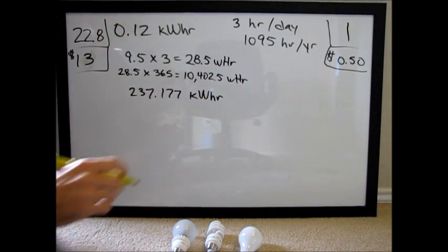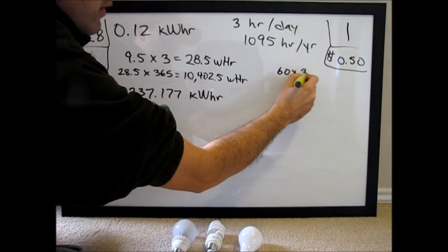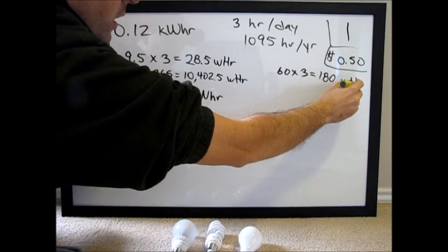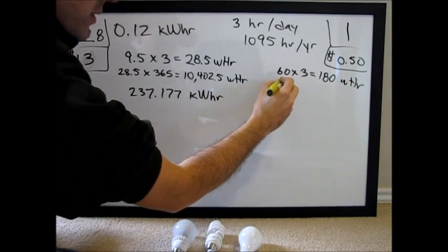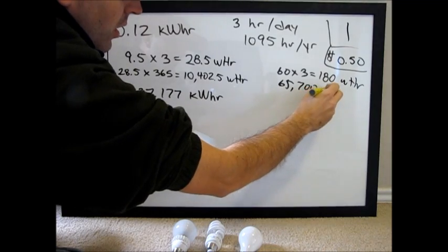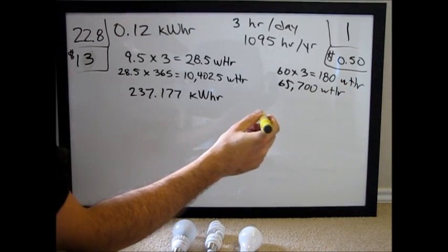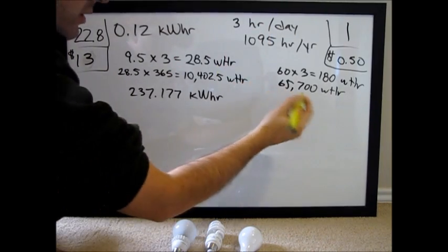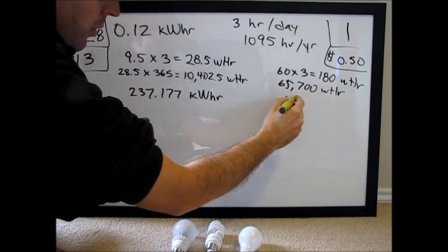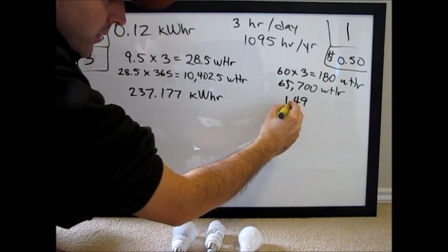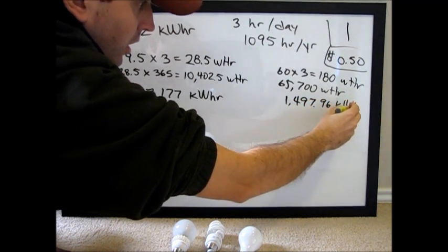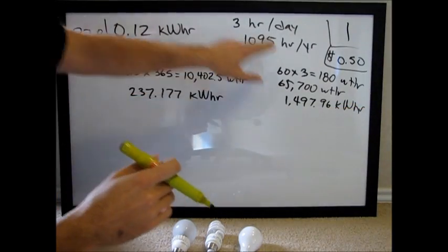Over here, we've got 60 times 3 is easy, 180 watt hours per day. Multiply it by 365, we get 65,700 watt hours per year. Bulb's only good for a year, but we still need to multiply it by 22.8 years for sake of comparison. So that equals 1,497.96 kilowatt hours. So we've converted to this unit of measurement again.